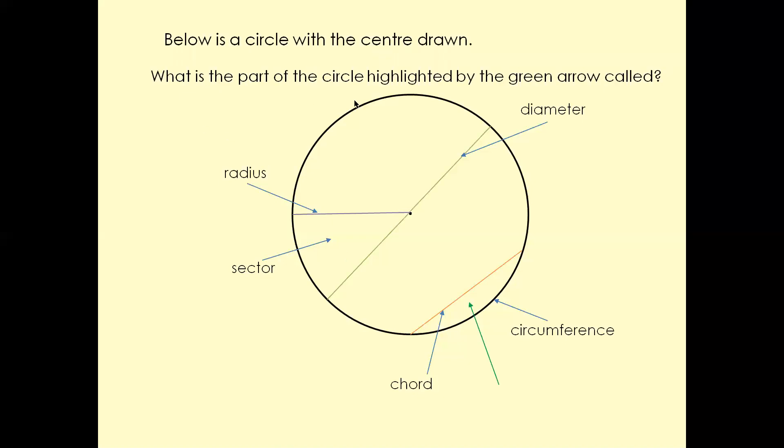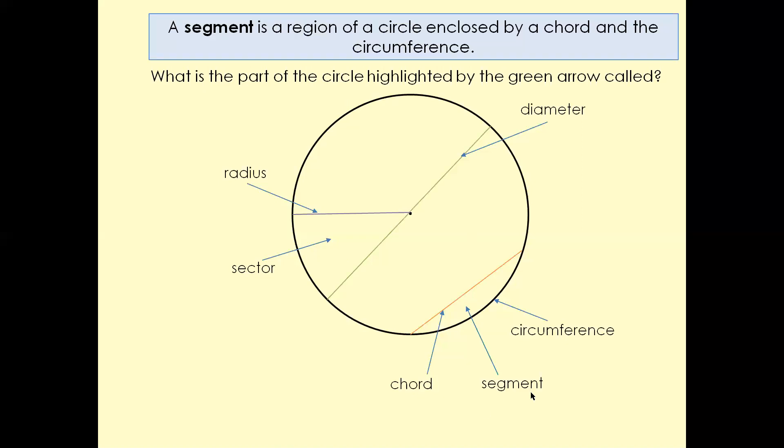Which part of the circle is highlighted by the green arrow? It's called a segment. A segment is a region of a circle enclosed by a chord and the circumference. This region here is enclosed by a chord and the circumference.